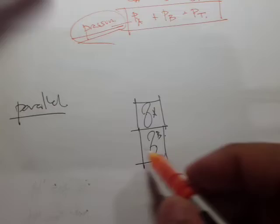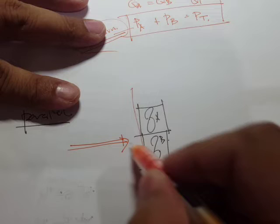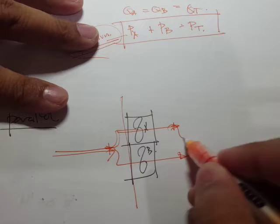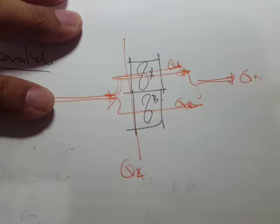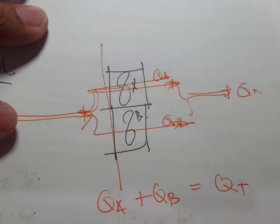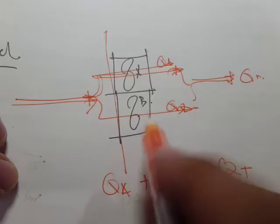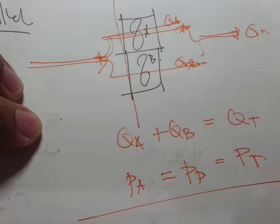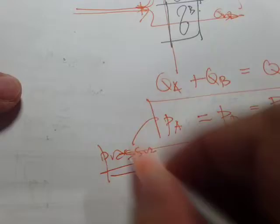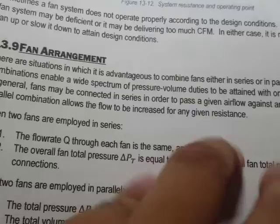For parallel arrangement, the airflow splits — part enters fan A and part enters fan B. The total flow rate is Q_A plus Q_B, which increases the overall flow rate. However, the pressure of fan A equals the pressure of fan B and equals the total pressure, so static pressure does not increase.